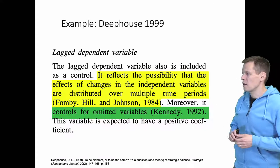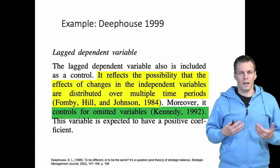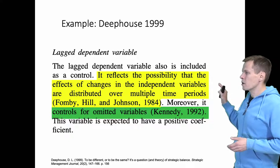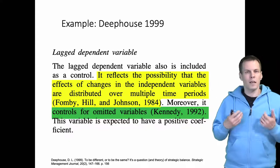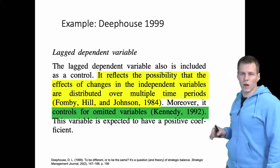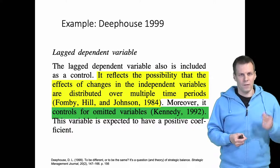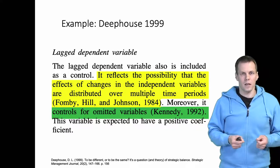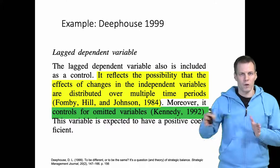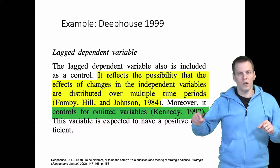Deep House (1999) explains that there are two reasons why a lag dependent variable is included in a model. The first reason is that it reflects the possibility that the effects of changes in independent variables are reflected over multiple time periods. So basically, the effect of x on y is not instantaneous — when x changes, y changes at multiple different time periods, giving an effect distributed over time.